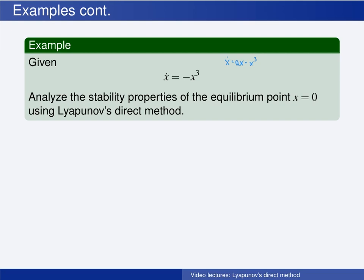Lyapunov's indirect method showed that for all negative values of a, the origin is locally exponentially stable. And for all positive values of a, the origin is unstable.